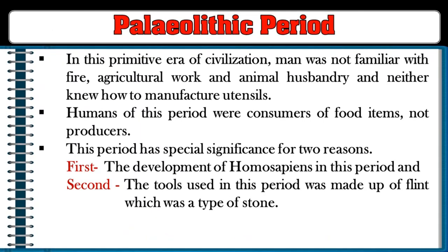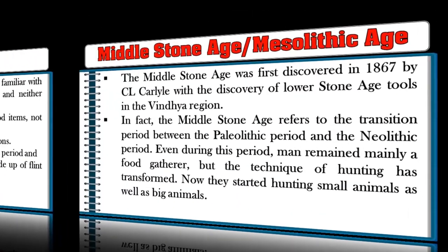In Bhimbetka, paintings of various periods are seen. In this primitive era, man was not familiar with fire, agriculture, or animal husbandry, and did not know how to manufacture utensils. Humans of this period were consumers of food, not producers. This period has special significance for two reasons: the development of Homo sapiens, and the use of flint stone tools.